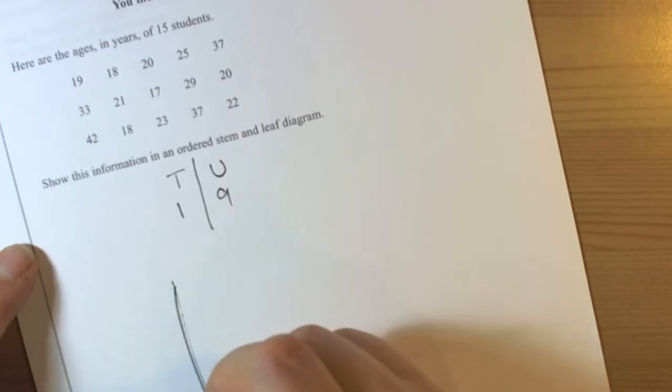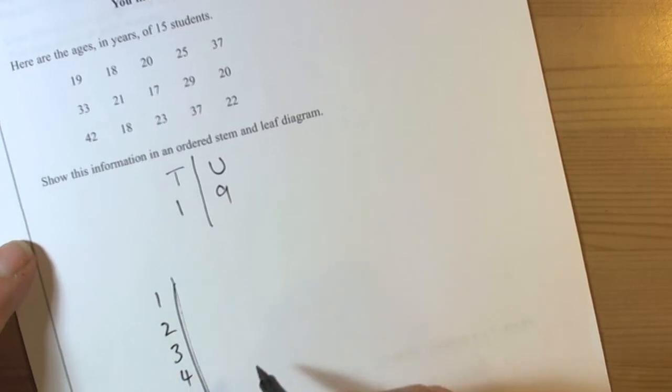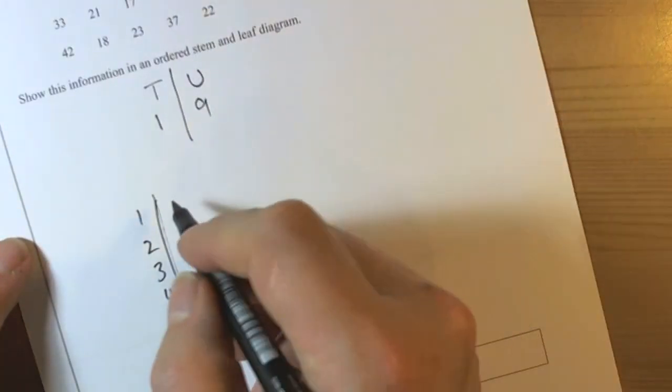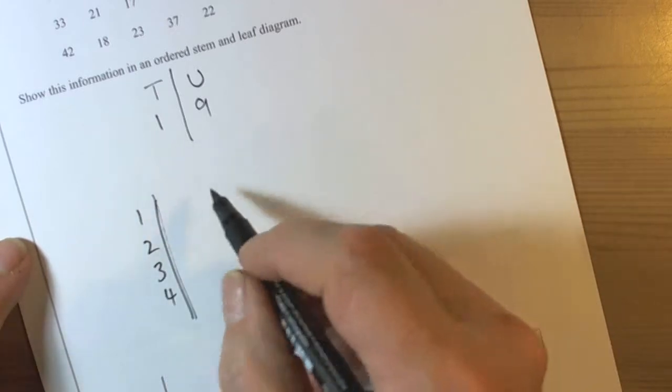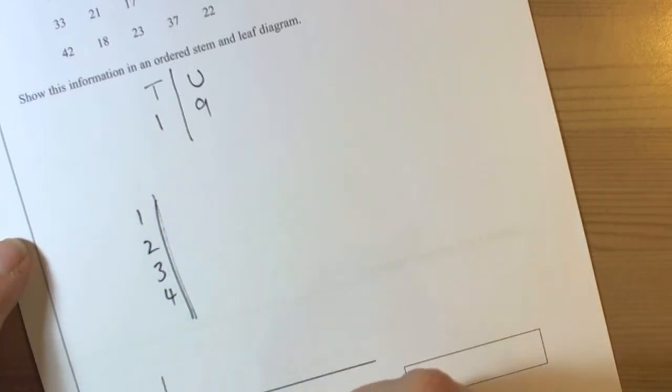So we know the table is going to go one, two for tens, twenties, thirties, forties. And we can fill it in in several ways. This space has been given so that you could actually do it in an unordered fashion and then rewrite it in the ordered way.